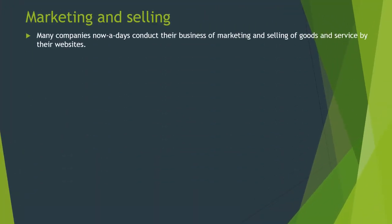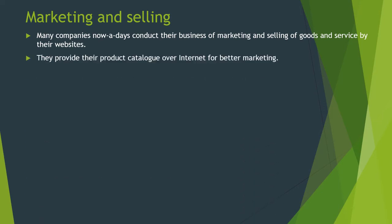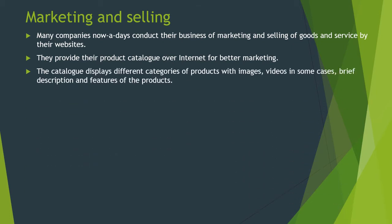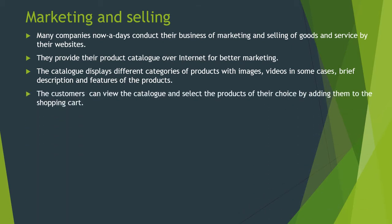Many companies nowadays conduct their business of marketing and selling goods and services through their own websites. They provide their product catalog over the internet for better marketing. The catalog displays different categories of products with images, and in some cases videos, along with a brief description and features of the products so that users can know about and explore them. The customer can view the catalog and select products of their choice by adding them to the shopping cart.